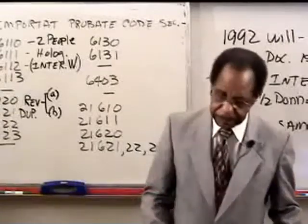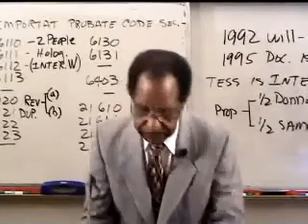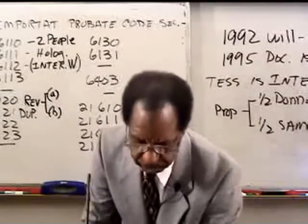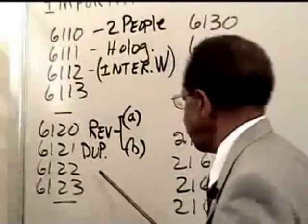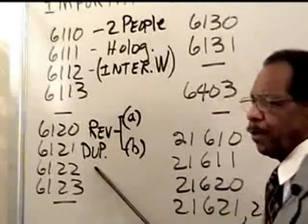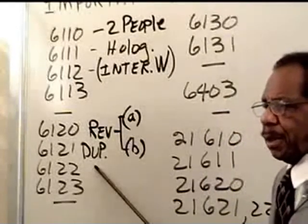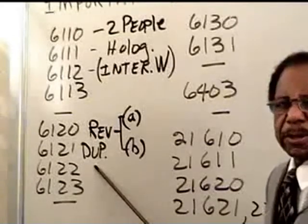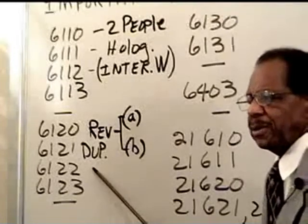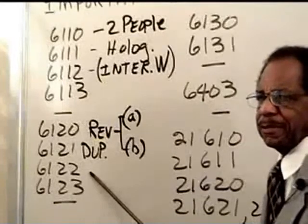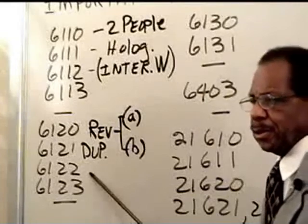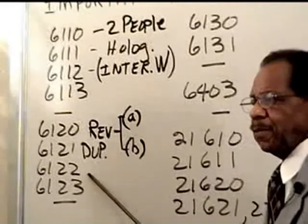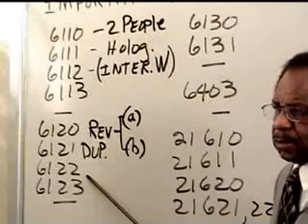Sections 6122 and 6123. Section 6122 simply says that if you are married and have a will, then get divorced, everything in the will that gives anything to your spouse — property or power of appointment — is revoked by the divorce itself. It used to be that after divorce you had to change your will; this code section automatically takes them out. And if you remarry the same person, the law also automatically puts them back in the will.